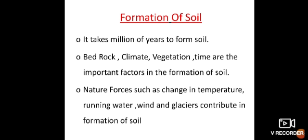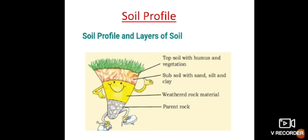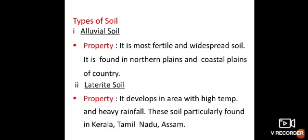How is soil formed? It takes millions of years to form the soil. Bedrock, climate, and vegetation are some important factors in the formation of soil. Besides this, some natural forces like temperature, running water, wind, and glaciers also contribute to soil formation. Through this diagram we will understand the layers of the soil: topsoil with humus and vegetation, subsoil with sand and silt, weathered rock material, and parent rock — this is the soil profile.